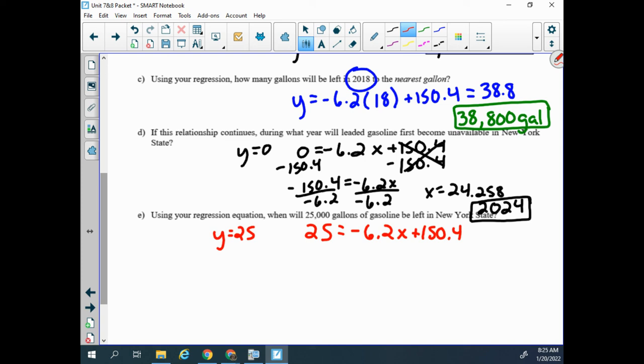And just to keep the video a little shorter, this is a super simple equation to solve. If I subtracted the 150.4 and divided by negative 6.2, I would get 20.2258 equals x. So this is just solving it. And that value, what year would that be? 2000 plus 20 would be 2020.